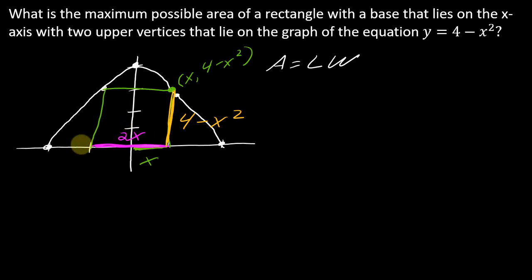Okay. So now I want to rewrite this as 2x times 4 minus x squared, which of course then you want to distribute that. So that's 8x minus 2x to the third. Okay.